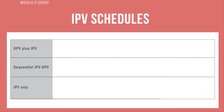When is it given? For countries no longer infected with polio, WHO recommends that children receive 1 to 3 doses of IPV depending on the country's use of OPV. IPV can be given with oral polio vaccine at 14 weeks of age. Alternatively, IPV can be given in a sequential series, followed by OPV.